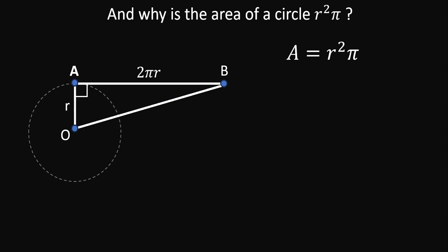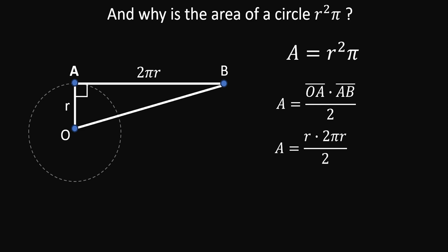We find the area of right triangle OAB by multiplying its legs OA and AB and dividing by two. Replacing OA with radius r and AB with circumference 2πr, we cancel the two's, and multiplying r by r gives r². So the area of the circle equals r² × π — that's our formula.